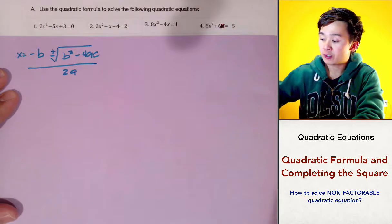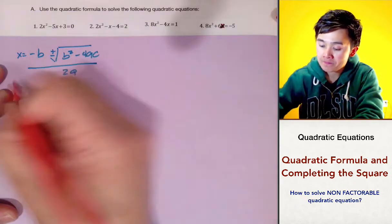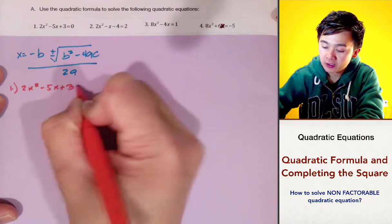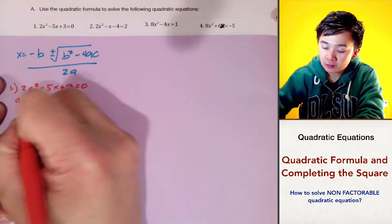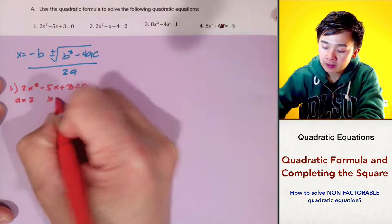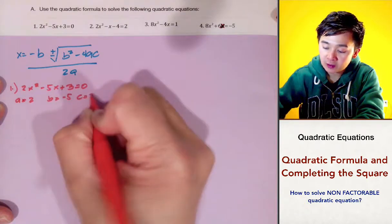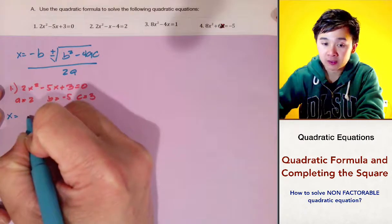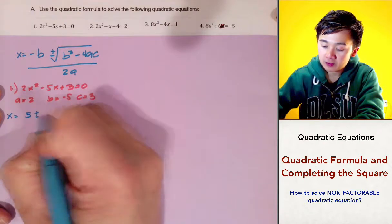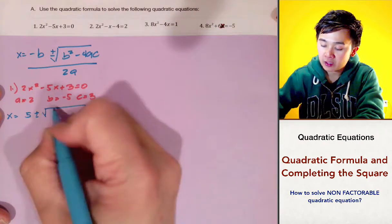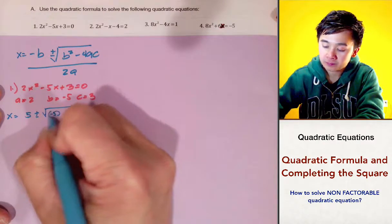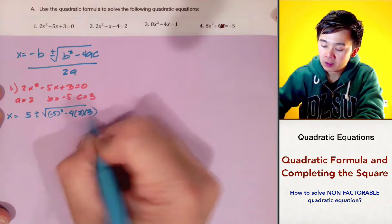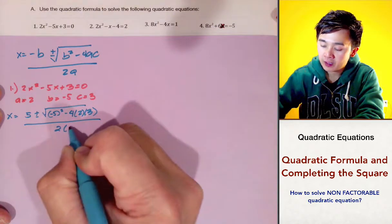To solve the first problem, we have 2x squared minus 5x plus 3 equal to 0. So we have a equals 2, b equals negative 5, and c equals 3. Now by applying the formula, we have x equals the opposite of b, which is positive 5, plus or minus the square root of b squared minus 4ac all over 2a.